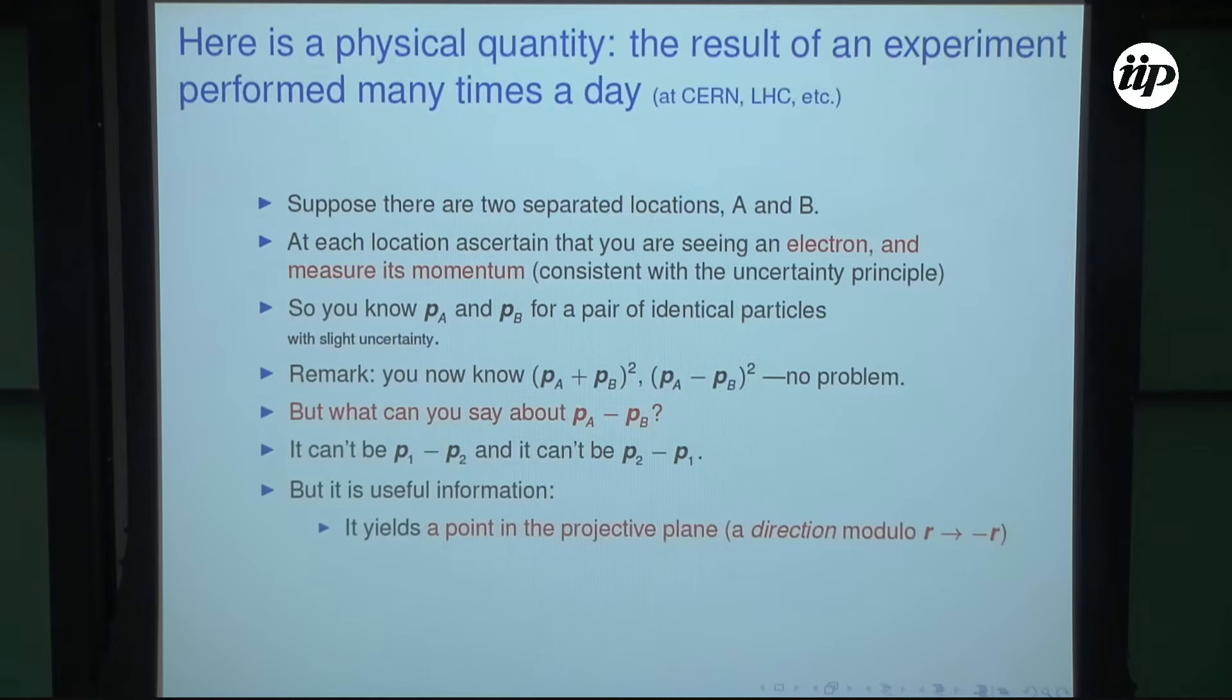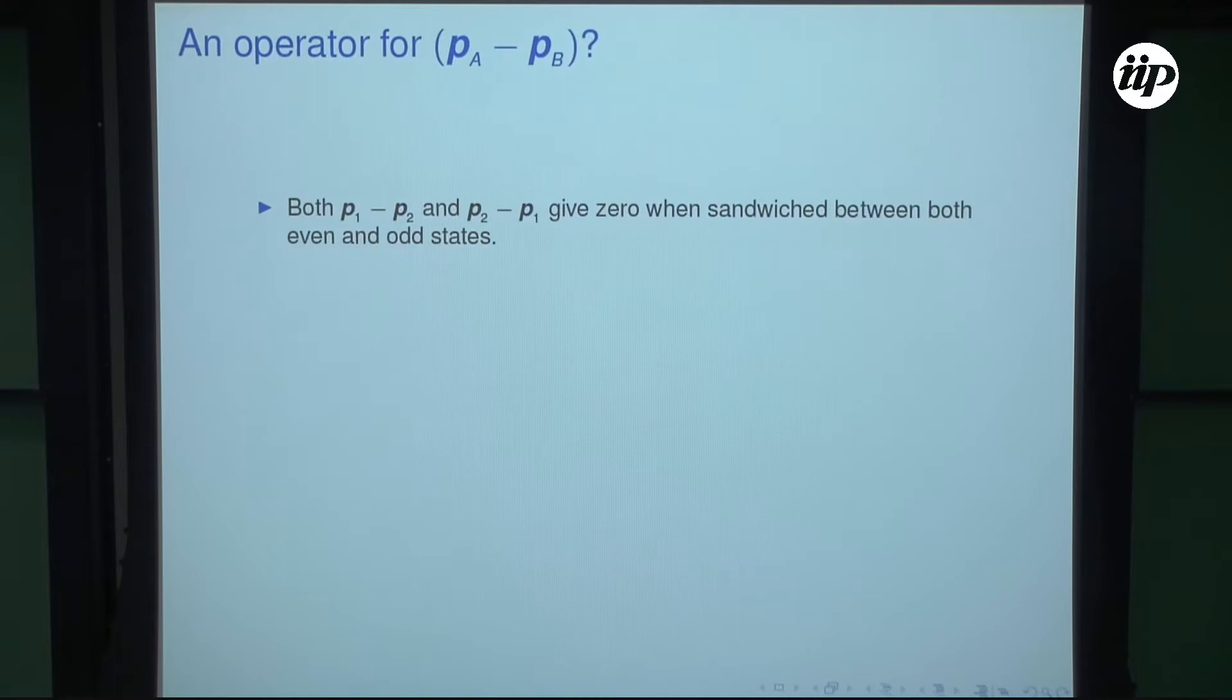It's not PA1 minus P2, where you're assigning random numbers to the particles, and it's not P2 minus P1, but it is useful information. You learn something from PA minus PB. In particular, you learn a point on the projective plane, you learn the direction. The direction might be this way, it might be that way, but it's a certain line on the projective plane, which is really the projective sphere. What is the mathematical object associated with this information?